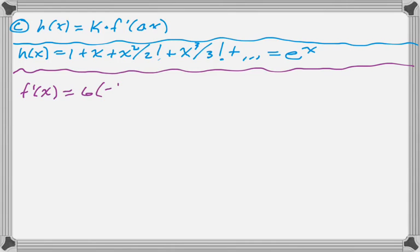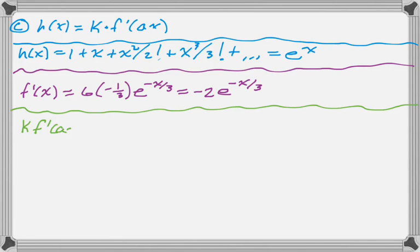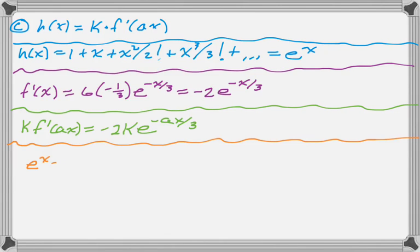So the next thing I'm going to do, I'm going to find f prime of x. Now I'm using f of x. I'm not using the series definitions anymore. So it's like we went from a function to a series. Now we're going from a series to a function. So there's f prime of x. But the problem tells me that I need k times f prime of a of x. So k times f prime of a of x is just going to be k times this thing. So negative 2k e to the negative a x over 3. And finally, we get to the part with the equation.